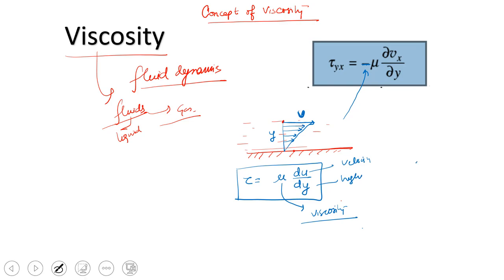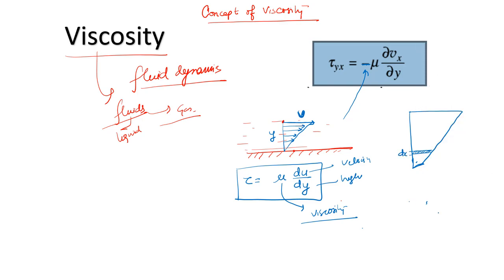If you consider the fluid layer by layer, taking a layer of thickness dy and velocity change du, then the shear stress tau acting on it is given as: tau = mu * (du/dy), where mu is the viscosity.